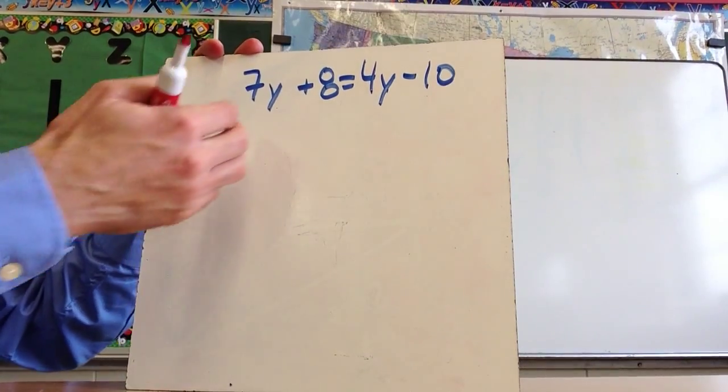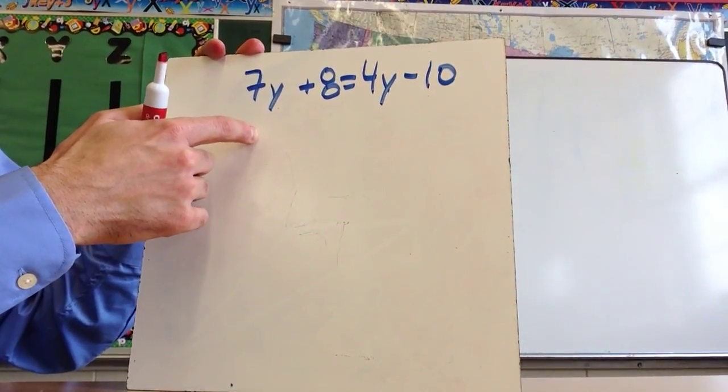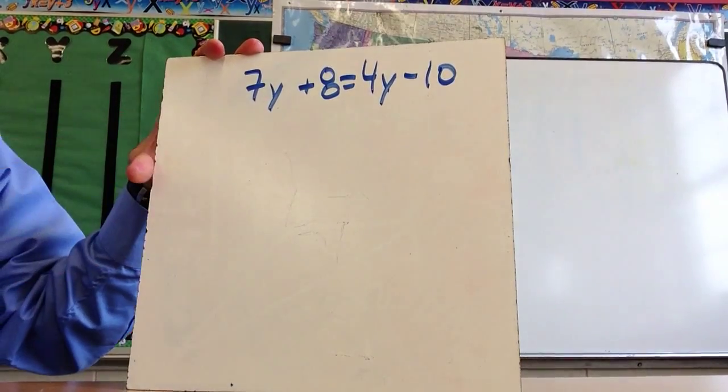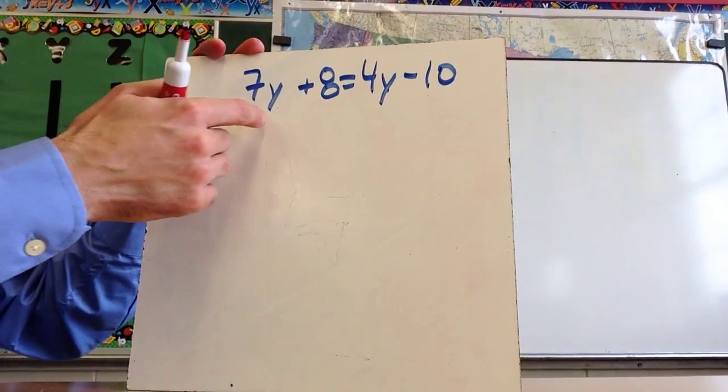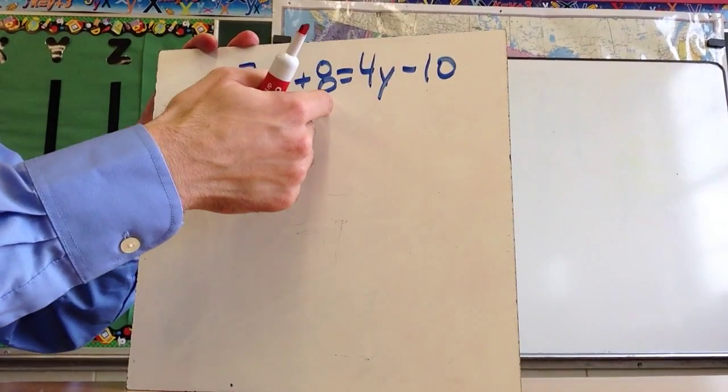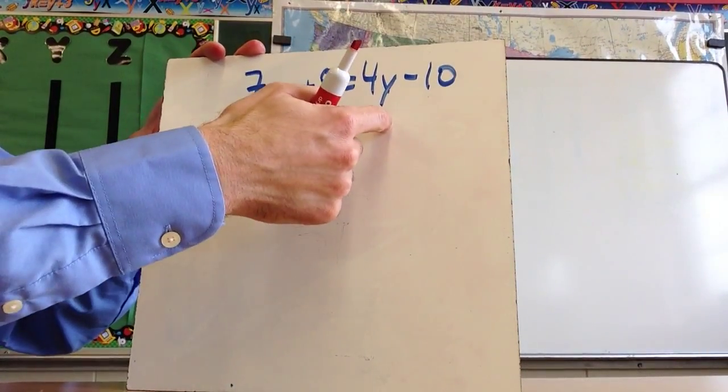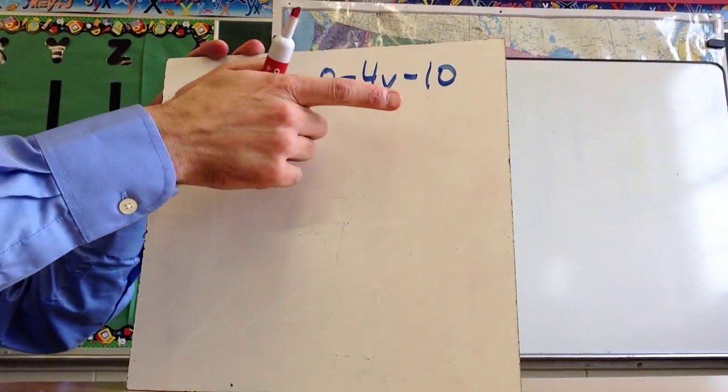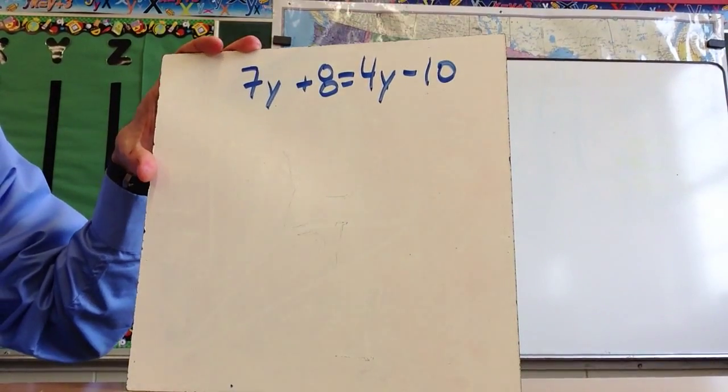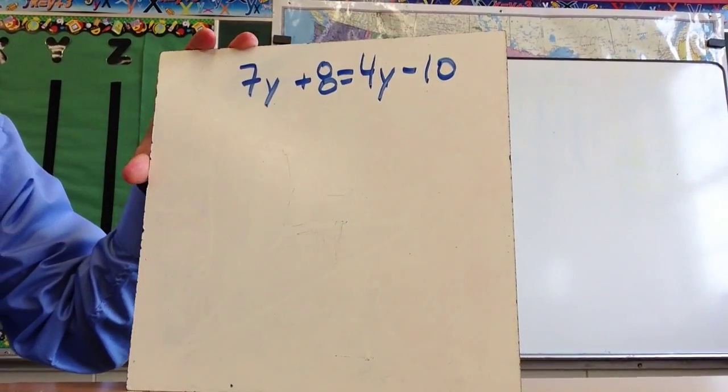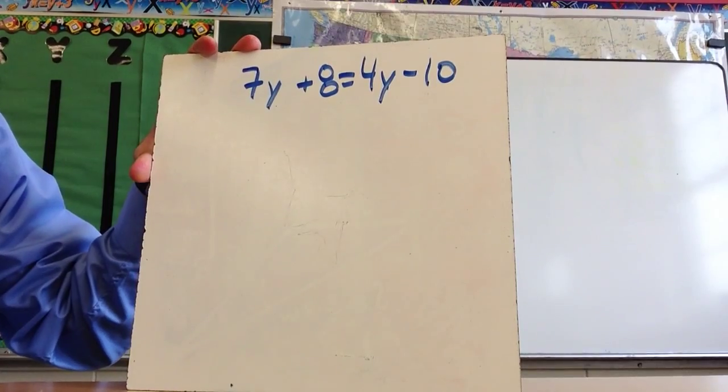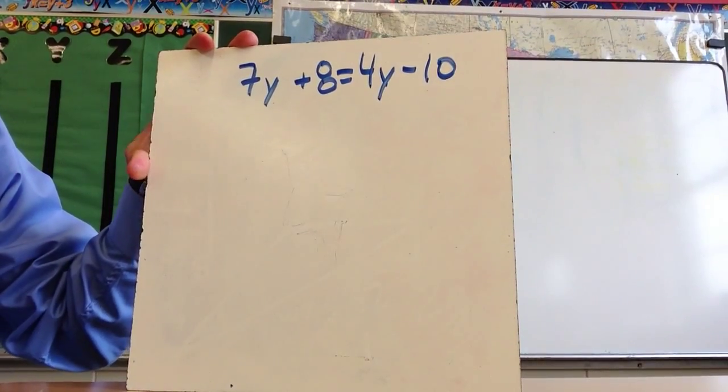For me, the easiest thing is going to be to put the y's on this side, mostly because it will keep them positive. However, you could theoretically add 10, subtract 7y, you're just going to end up with the y over on that side, and it will be negative. And if you want to try it, you can try it, pause the video, and then come back and watch us do it, make sure we get the same answer.